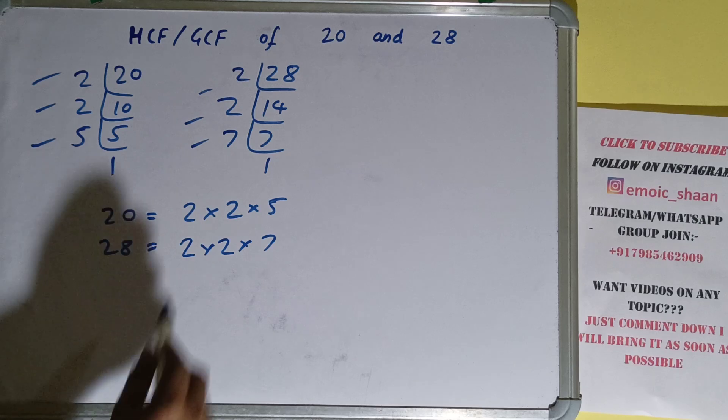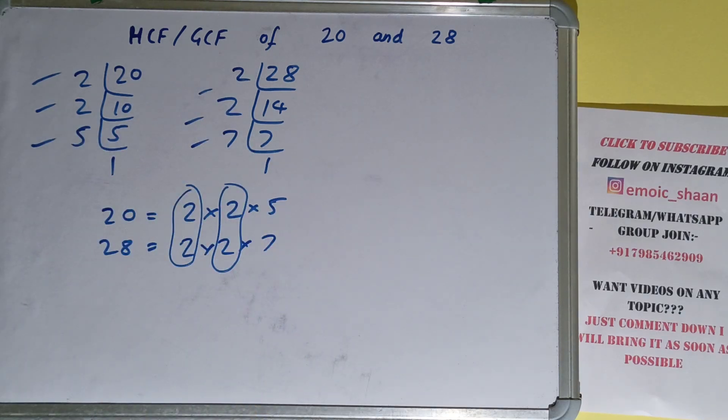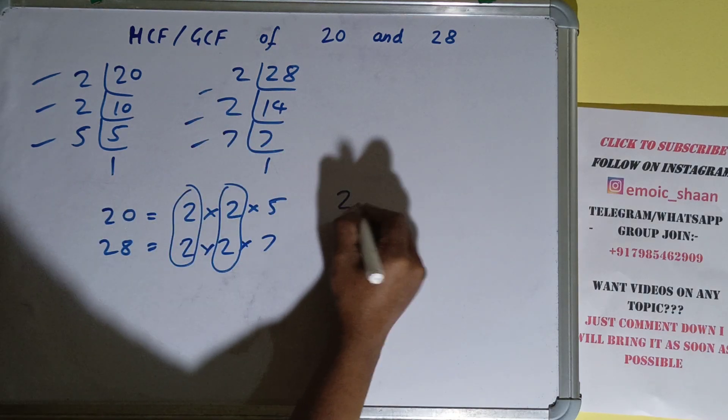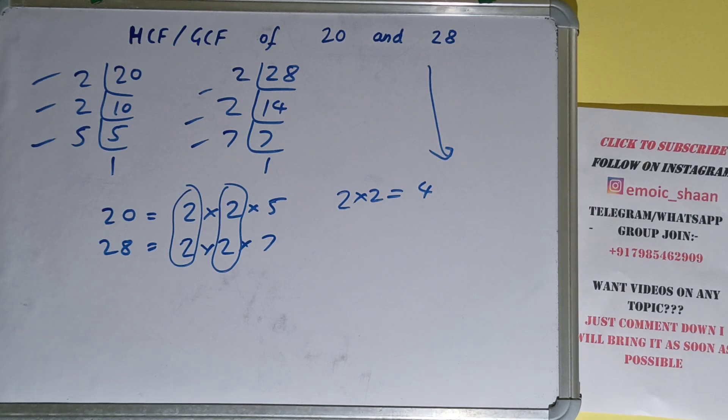The next thing we need to do is circle out the common prime factors. We have this 2 in common and this 2 in common. Do we have anything extra in common? No. So the answer will be 2×2, that is 4. The HCF or GCF of the numbers 20 and 28 is 4.